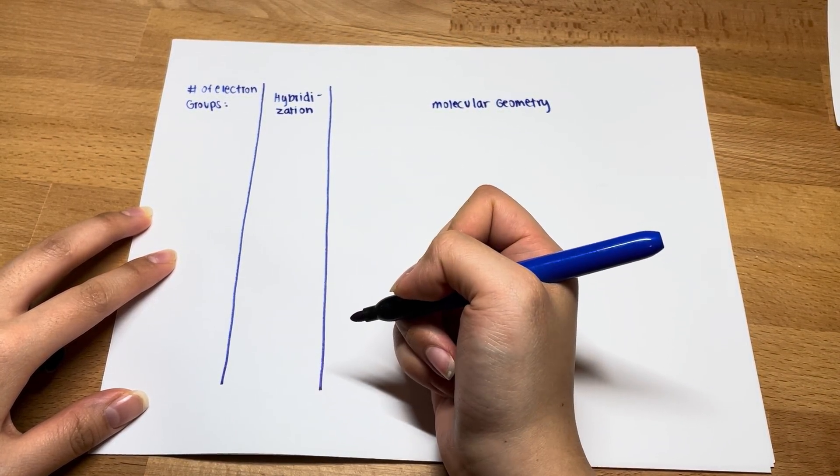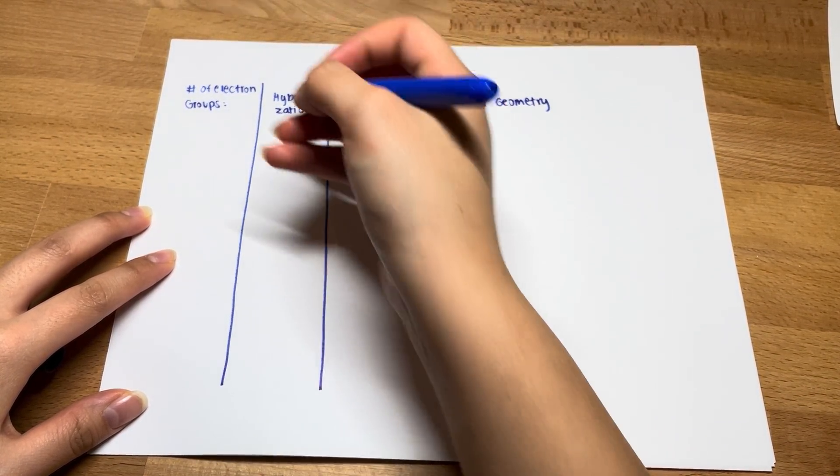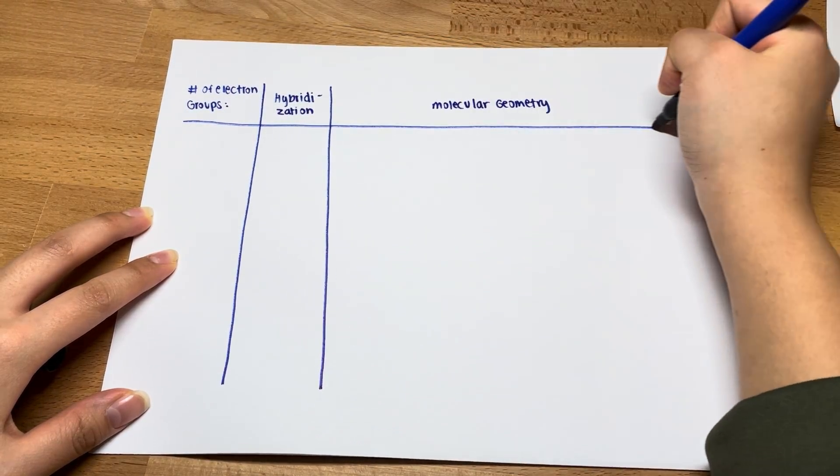Hybridization. This would be another column, and then molecular geometry. This would be a big column because there's a lot to remember.